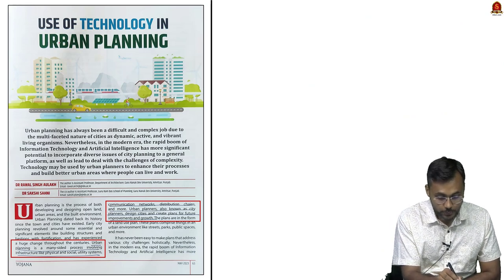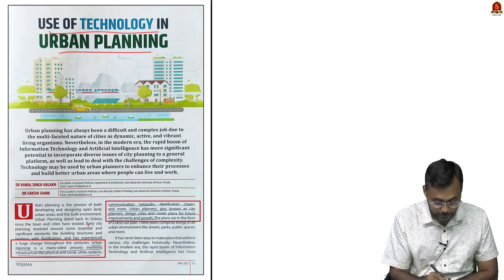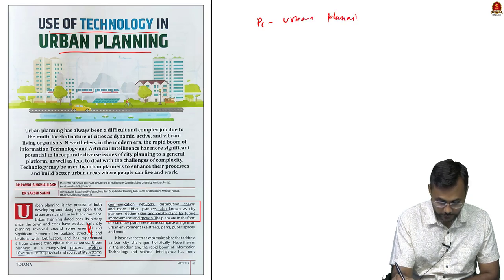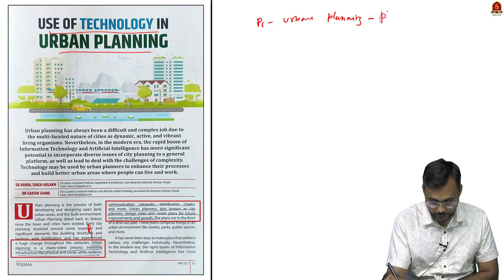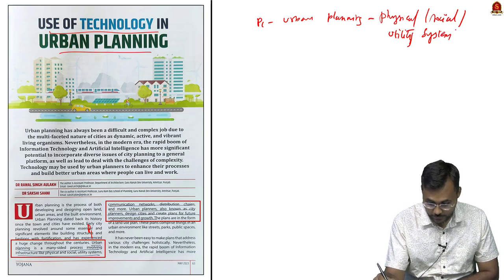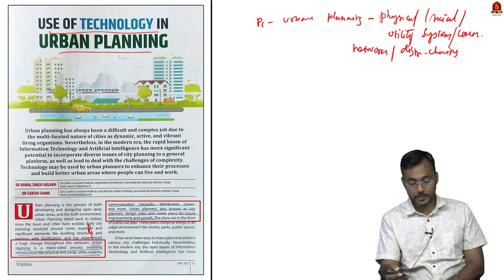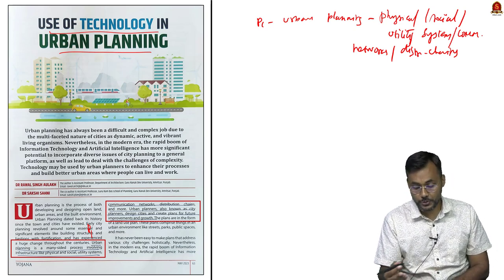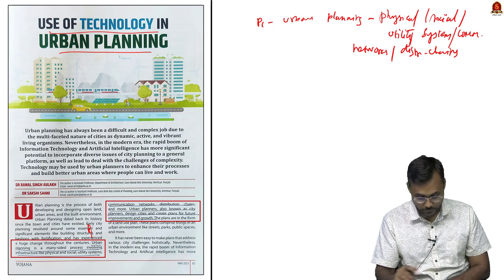The final article covers the use of technology in urban planning. Paragraph 1 explains that urban planning has multiple dimensions: physical planning, social dimensions, utility systems like public transportation and electricity, communication networks, and distribution chains. Urban planners focus on all these things.